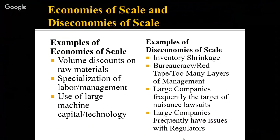Some examples of economies of scale: I've already mentioned volume discounts on raw materials and the use of large machine capital and technology. Another one is specialization of labor and management. It's a lot easier for an owner with five burger joints to act as a district manager with a head manager and assistant manager at each location making operational decisions, while major issues get passed up to the district manager.